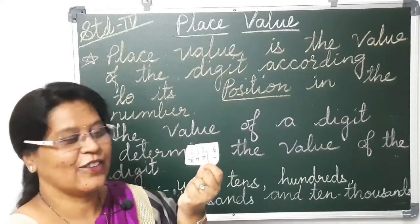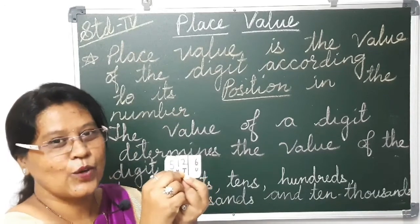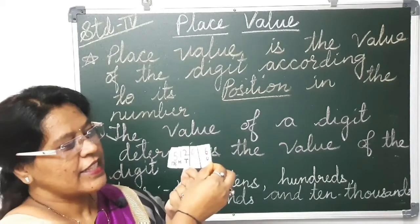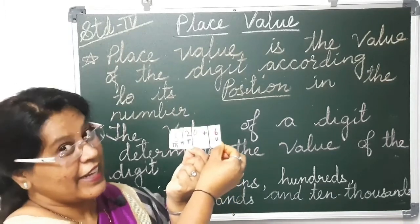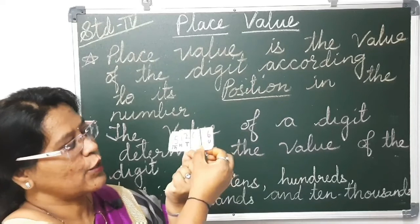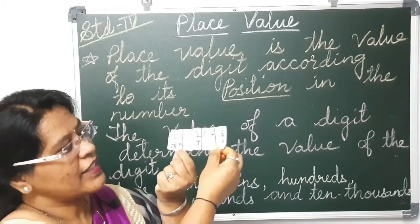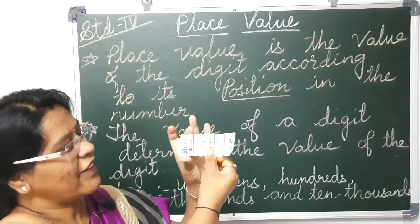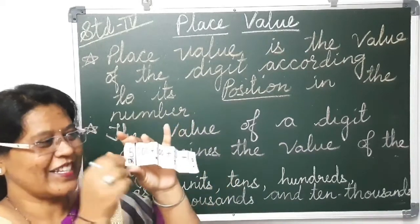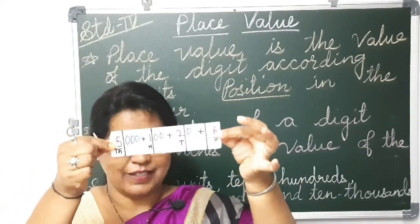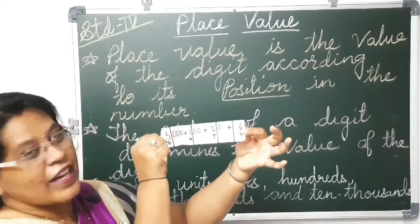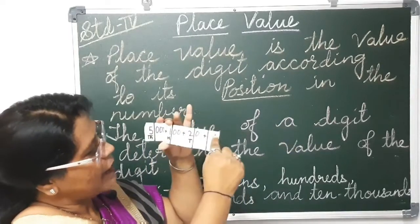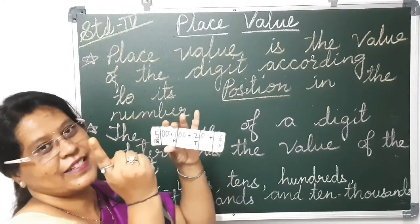And one more magic — spell again the magical word: Khulja simsim! Expanded form. Now 6 is in units place, so it is 6. 2 is in tens place, so it is 20. 1 is in hundreds place, so it is 100. And 5 is in thousands place, so it is 5,000. This is the expanded form: 5,000 plus 100 plus 20 plus 6.